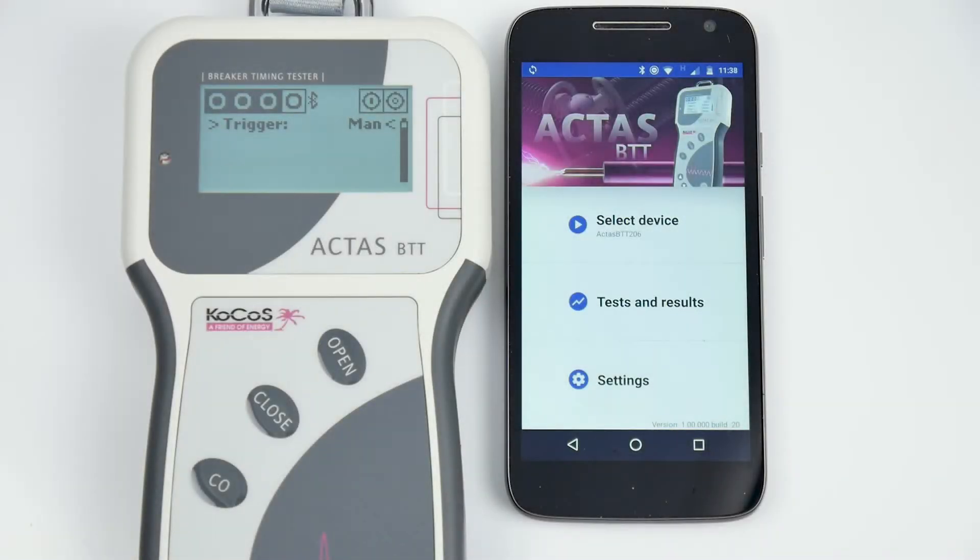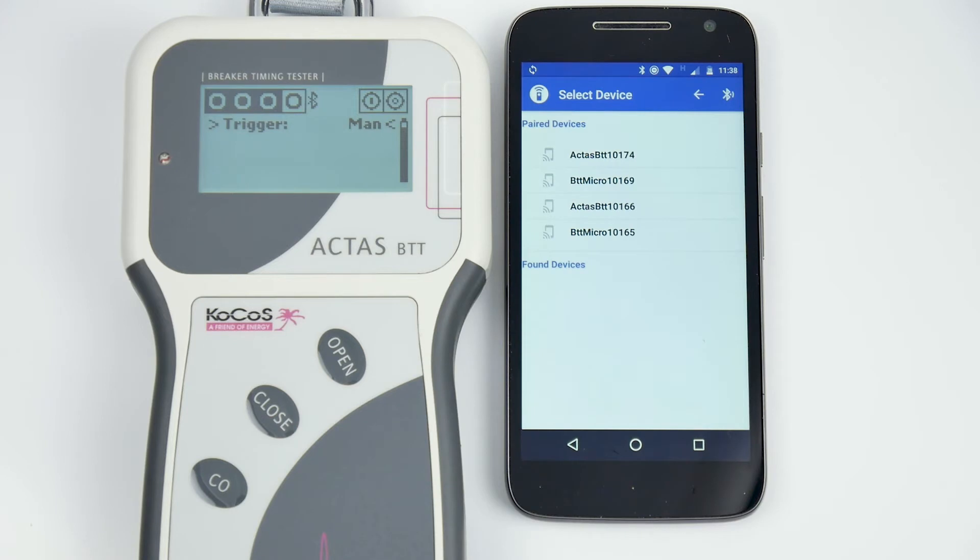The portable range also includes a breaker timing tester, Actis BTT, which can be operated using an app on your smartphone.